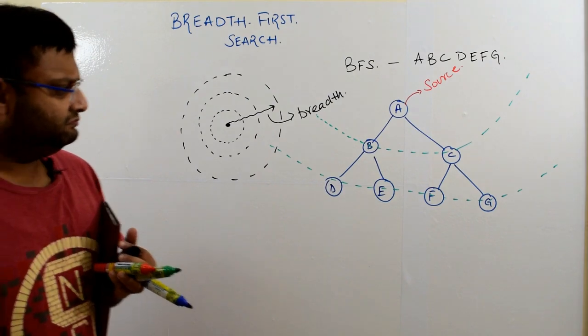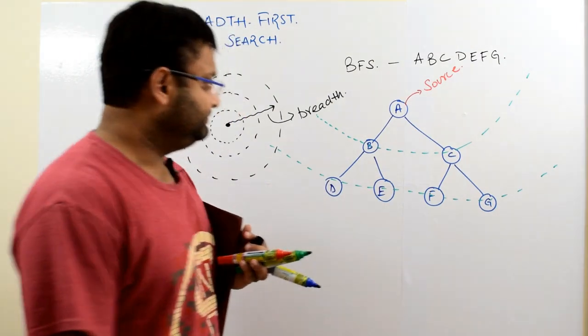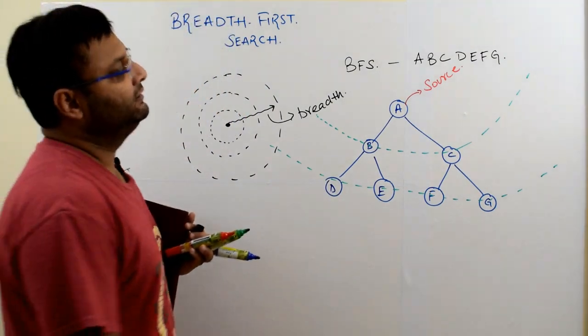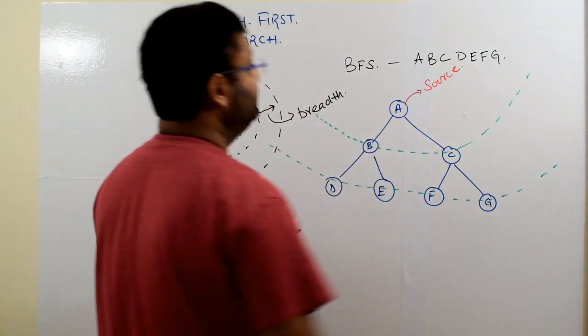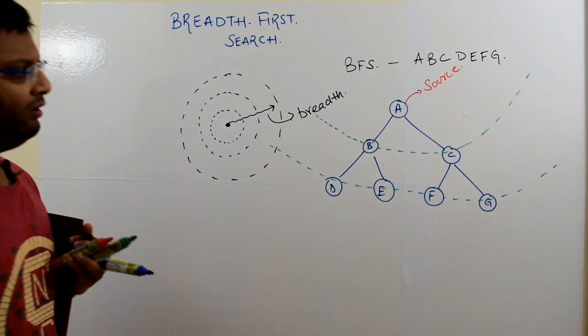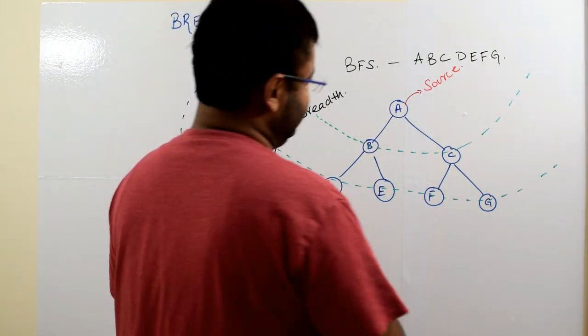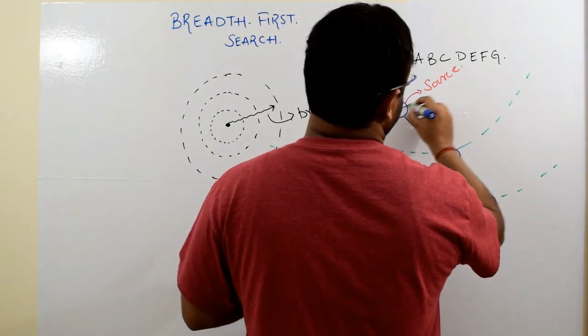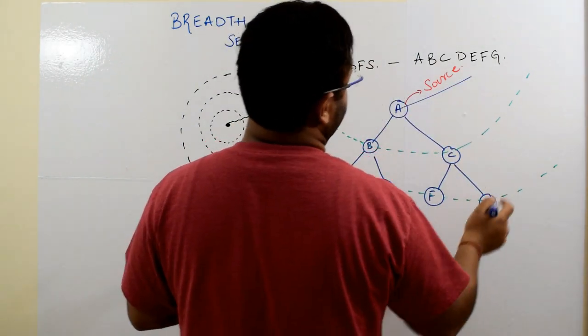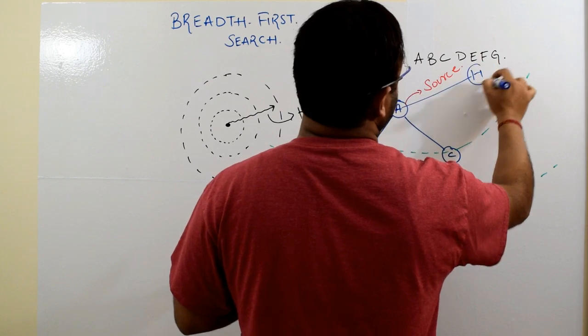You are right. This is what breadth first search of this simple graph. So I hope you could understand. Now, if I modify just like this, so suppose if I add another node like H, like this.